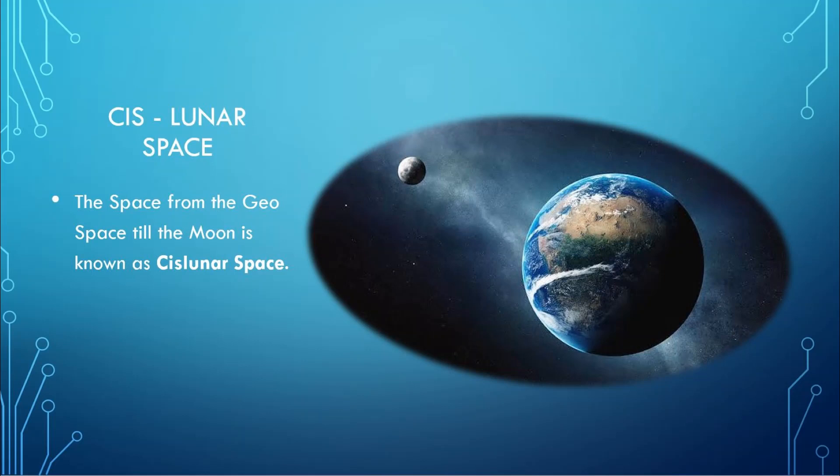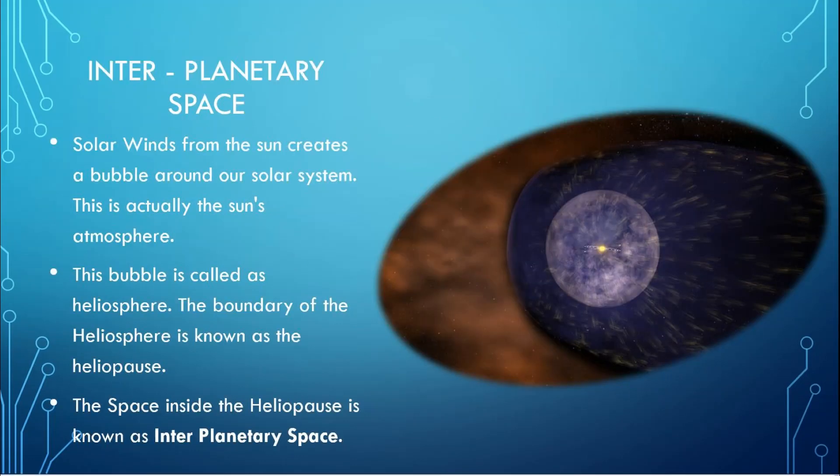Next comes the cislunar space. The cislunar space lies between the end of the geospace till the Moon's orbit. Next is interplanetary space.